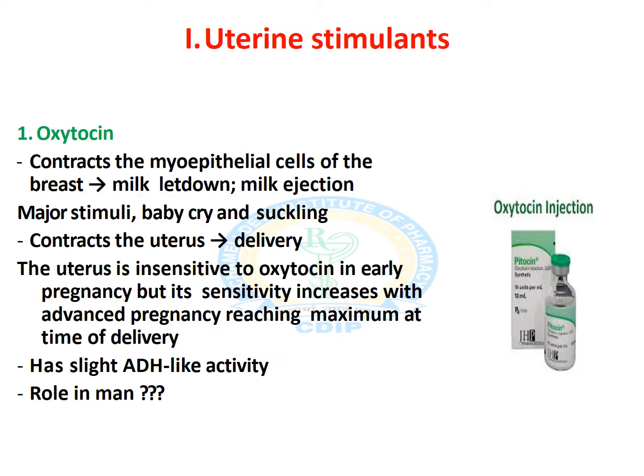Let us take up uterine stimulants first. The first and foremost, very important drug under this category is oxytocin. Oxytocin basically contracts the myoepithelial cells of the breast and lets the milk be ejected. The major stimuli of milk ejection are either a baby's cry or the suckling of the nipple by the baby.